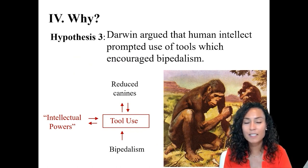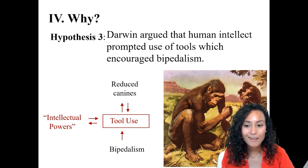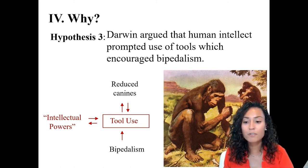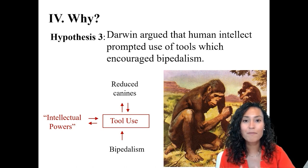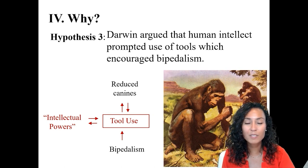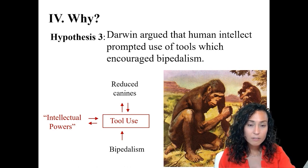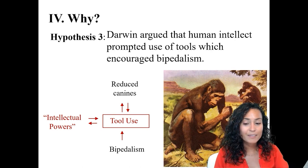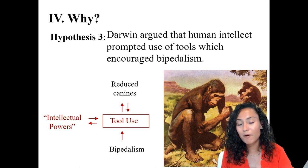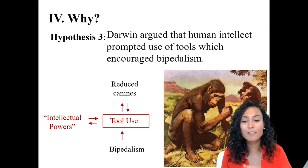One final hypothesis was originally offered by Darwin in 1871. Darwin argued that human intellect prompted the use of tools, which in turn encouraged bipedalism. Our hominin ancestors began experimenting with tools, and that experimentation was linked to the development of larger brains. Bipedalism allowed hominins to carry food or other portable items over long distances and freed up the forelimbs for tool use. In the next module, 1.3, we'll dive deeper into Darwin's idea that tool use was an important mechanism for driving human evolution.